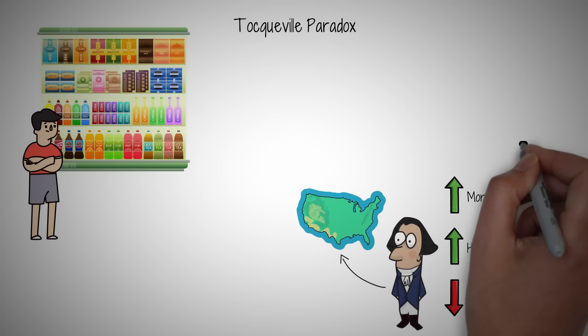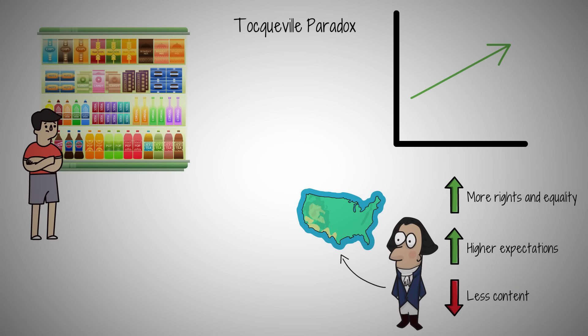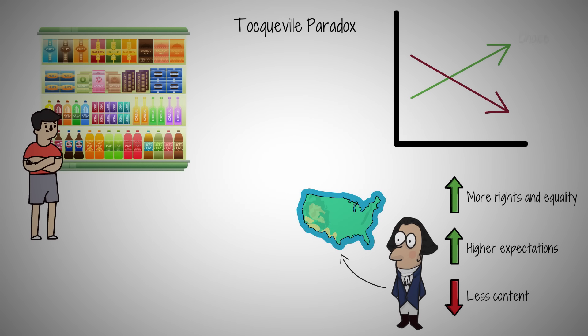So, what exactly is the Tocqueville paradox? It's the phenomenon where increased freedom and equality lead to greater dissatisfaction among people. Why? Because as our choices expand, so does our awareness of what we don't have, fueling a perpetual sense of longing and disappointment. But here's the kicker. Understanding this paradox can actually empower us.